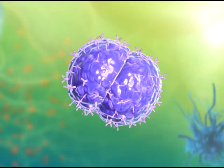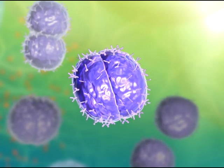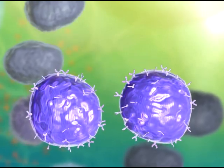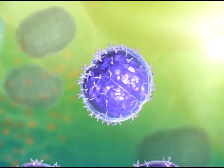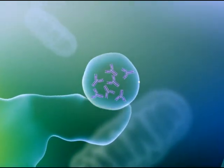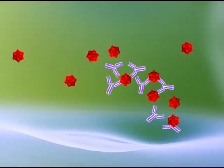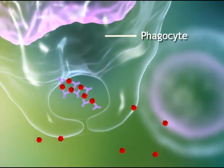The B cell proliferates and differentiates in a process called clonal expansion, resulting in two types of cell. Memory B cells carry the memory of this pathogen for many years. Plasma cells secrete antibodies that conduct surveillance for more rhinoviruses, grouping them together so they are easy targets for phagocytes.